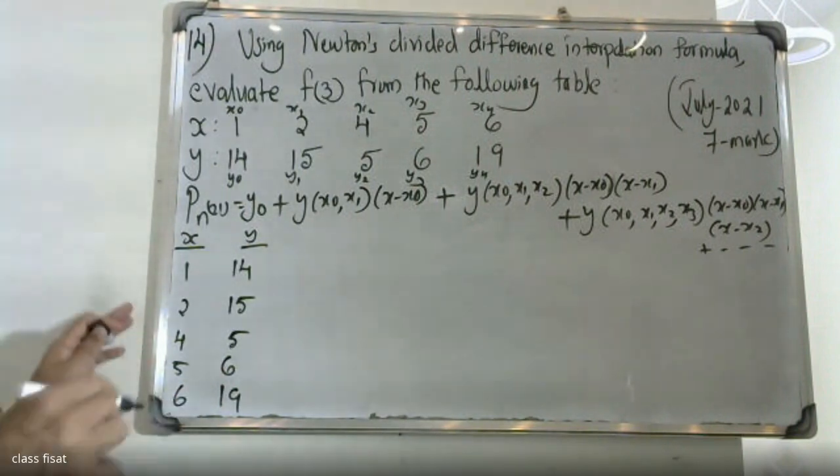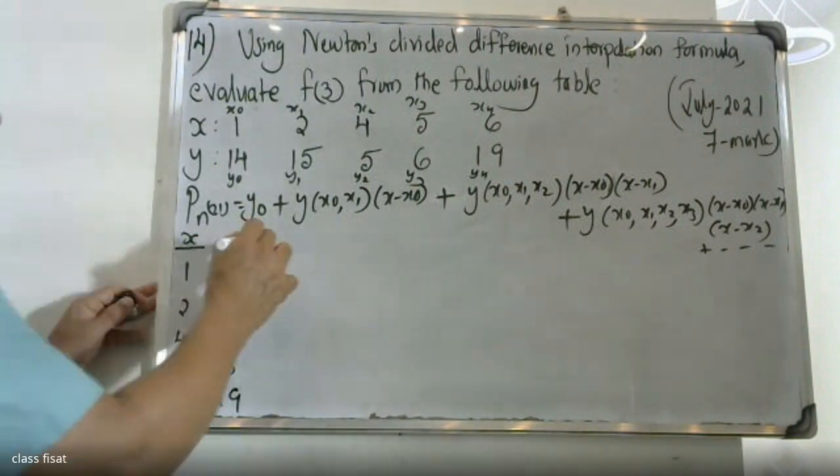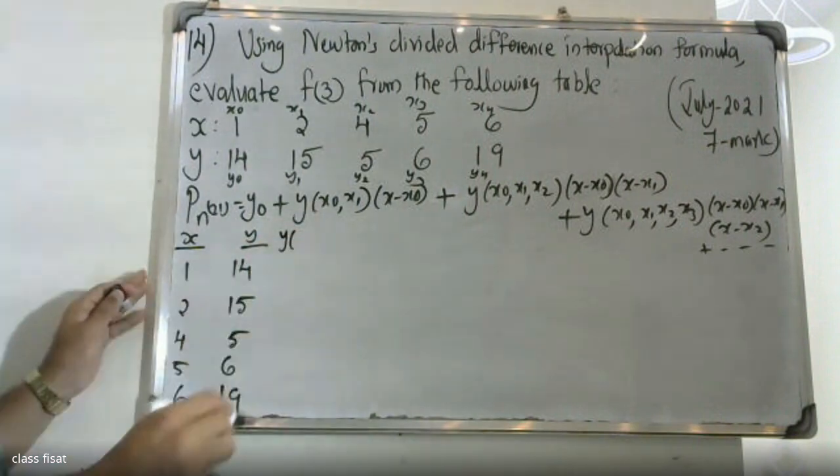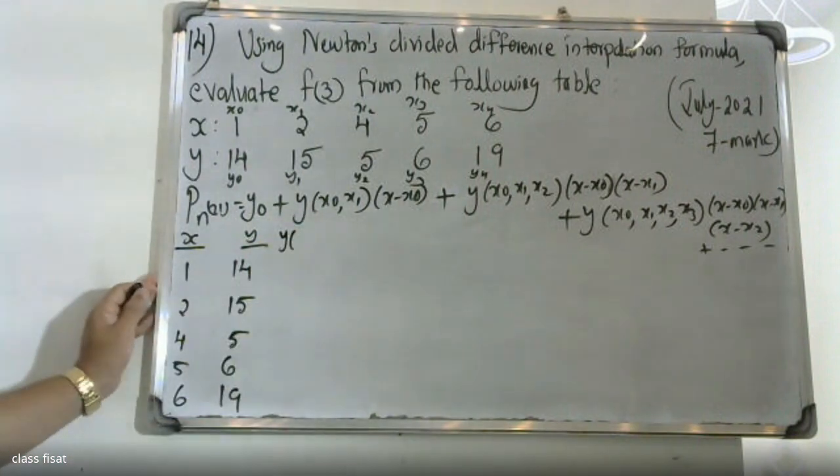This is the first divided difference column. y of x0, x1 — the first divided difference y(x0, x1).